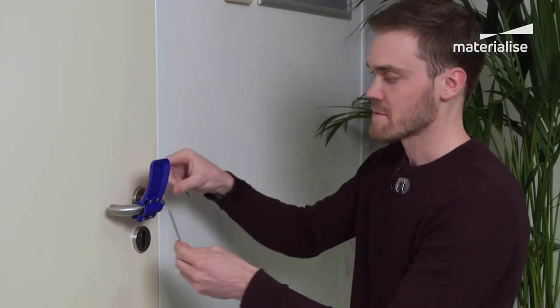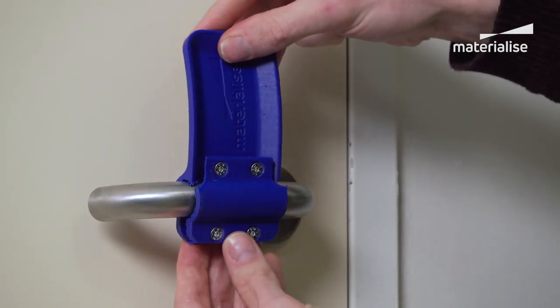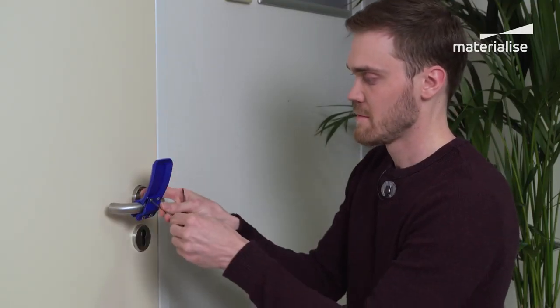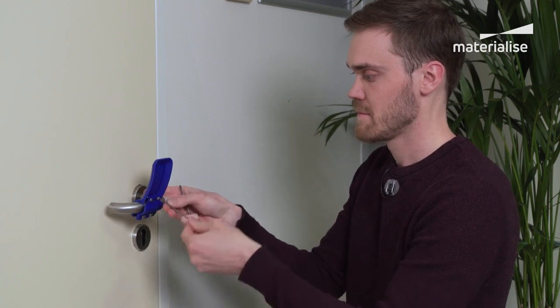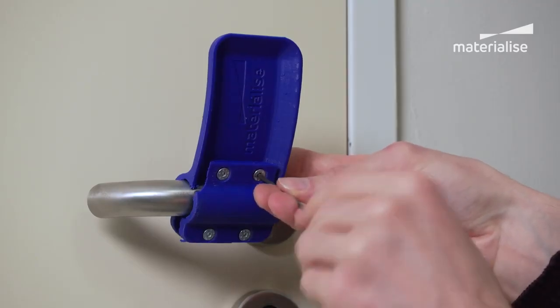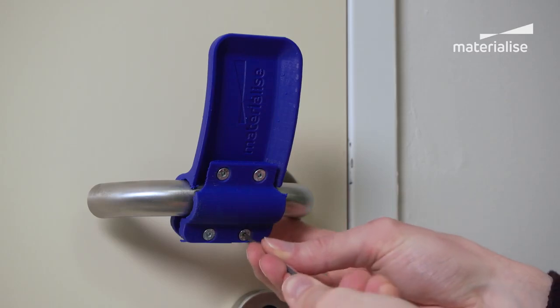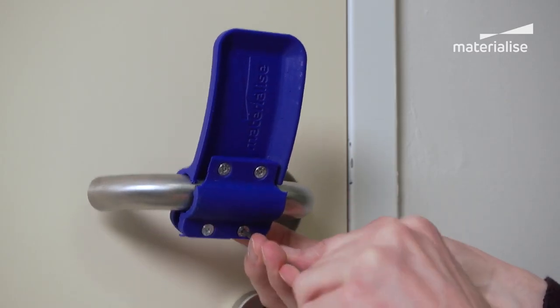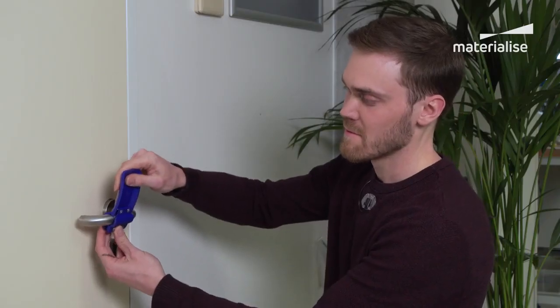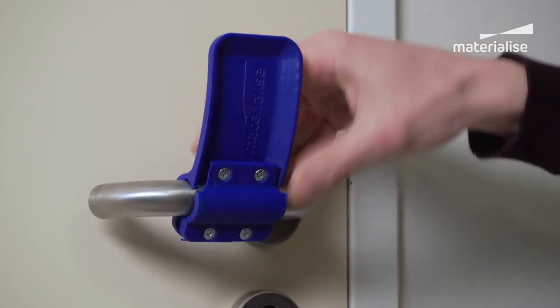Before tightening all the screws we will first put the door opener in the correct angle. Because the door opener is made out of plastic we advise you not to tighten the screws too hard. Just make sure it's tightened enough for the door opener not to rotate around the handle.